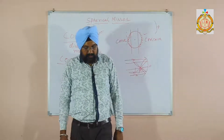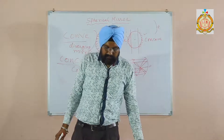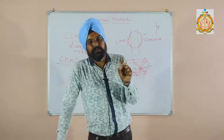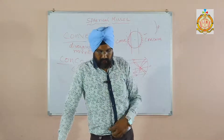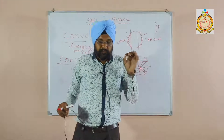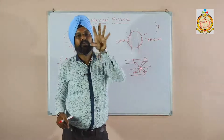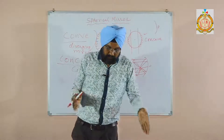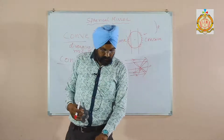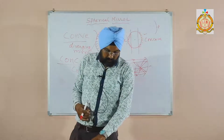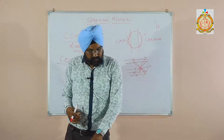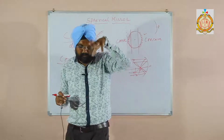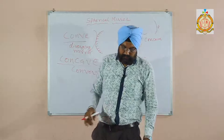For a convex mirror, focus is a point on the principal axis from which the light rays incident parallel to the principal axis appear to come. In the convex mirror, you always have to use the words 'appear to diverge' or 'appear to come' after reflection, because in a convex mirror it always gives a virtual image — the rays do not actually meet at one point. The parallel beam of light on the principal axis is focused at the focal point.